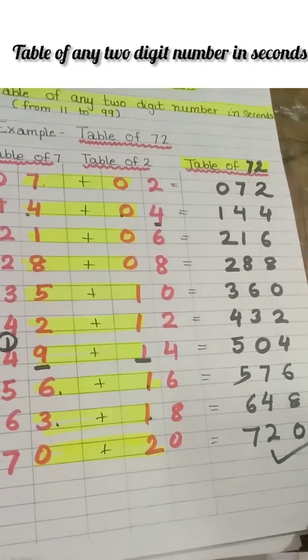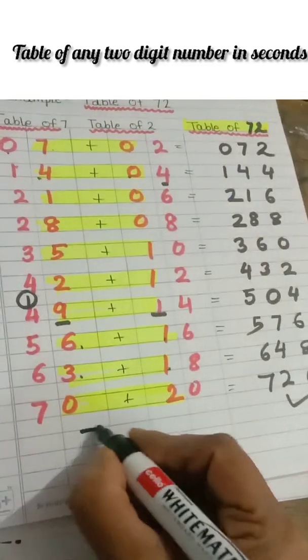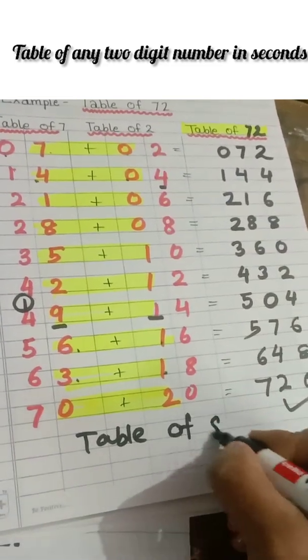Now your homework is table of 82. So this is the table of 72.